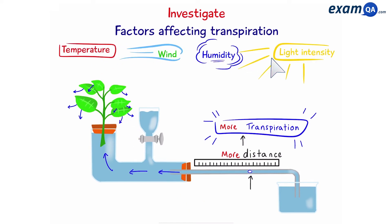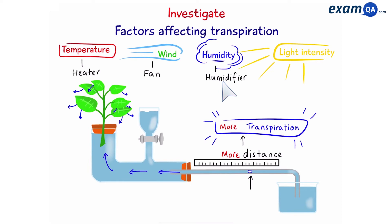The four factors are temperature, wind, humidity, and light intensity. If we're investigating temperature, we can place heaters around the plant. For wind, we can place a fan near the plant. For humidity, we can use a humidifier — a machine that releases water vapour. For light intensity, we can use LED lights. The reason we use LED lights is because they don't emit as much heat as normal bulbs, so we can remove temperature from the equation when testing only for light.